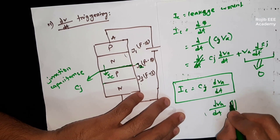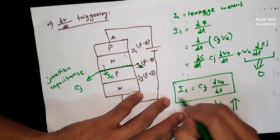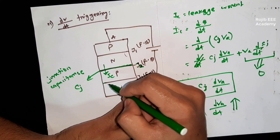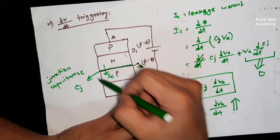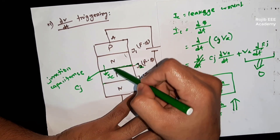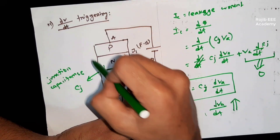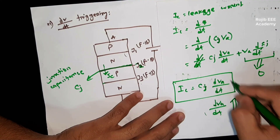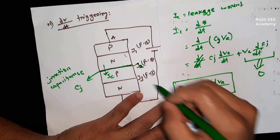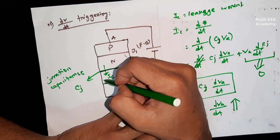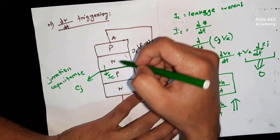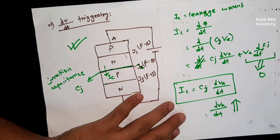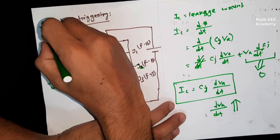The dv/dt turn-on method is based on the rate of change of voltage with respect to time. If dv/dt is high, the leakage current will increase. This means the leakage current increases, and the depletion layer gets compressed. When the depletion layer compresses, the thyristor can turn on by itself.